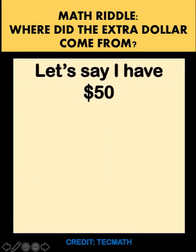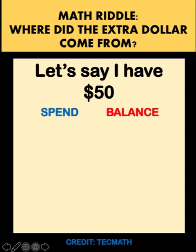Let's say I have $50 and I recorded the amount I spent and my balance. I spent $20, so my balance would be 50 minus 20 equals $30. Then from the $30, I spent $15, and my balance would be $15.